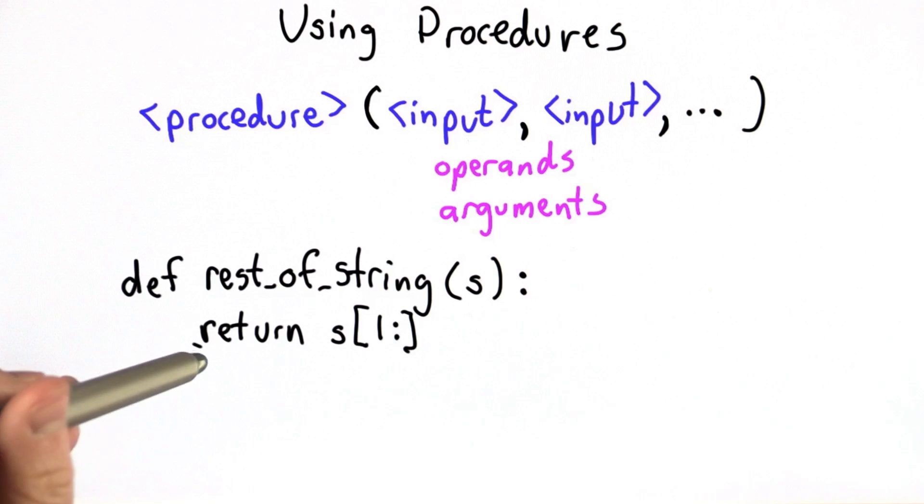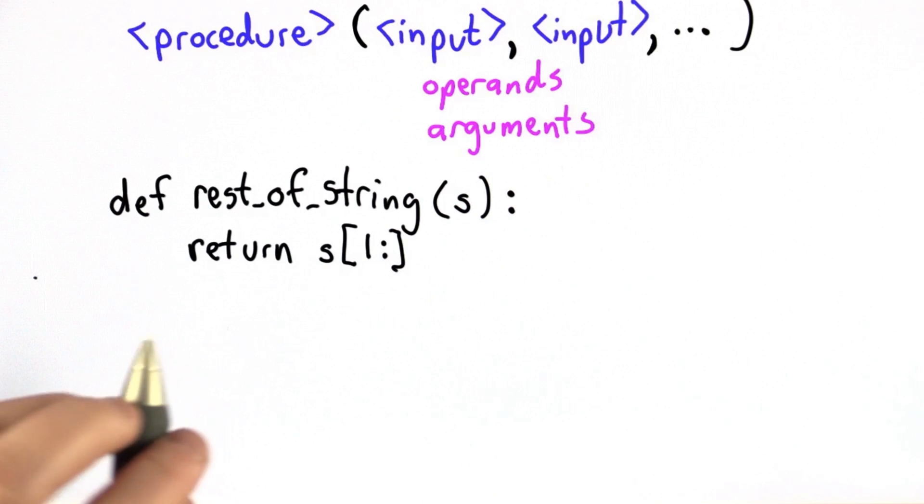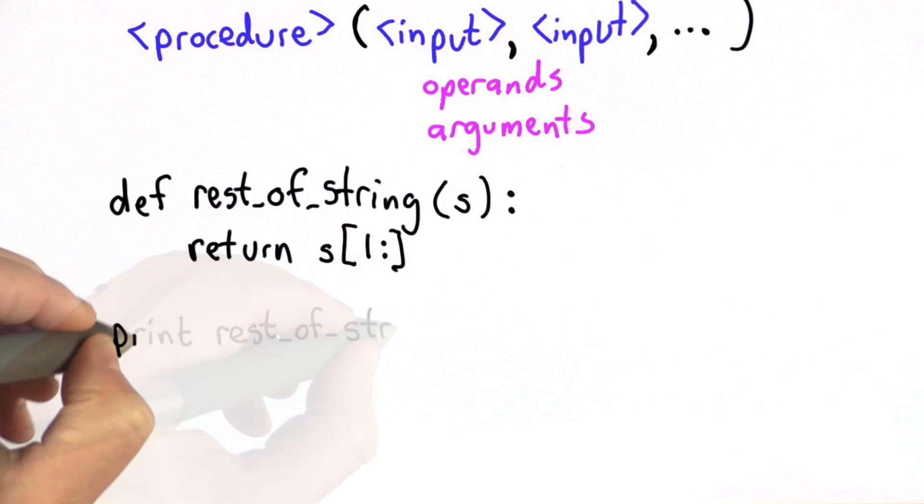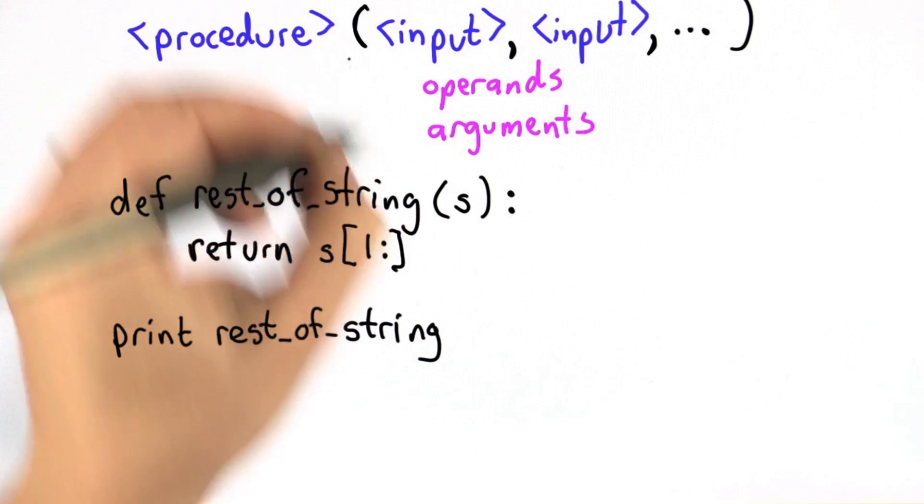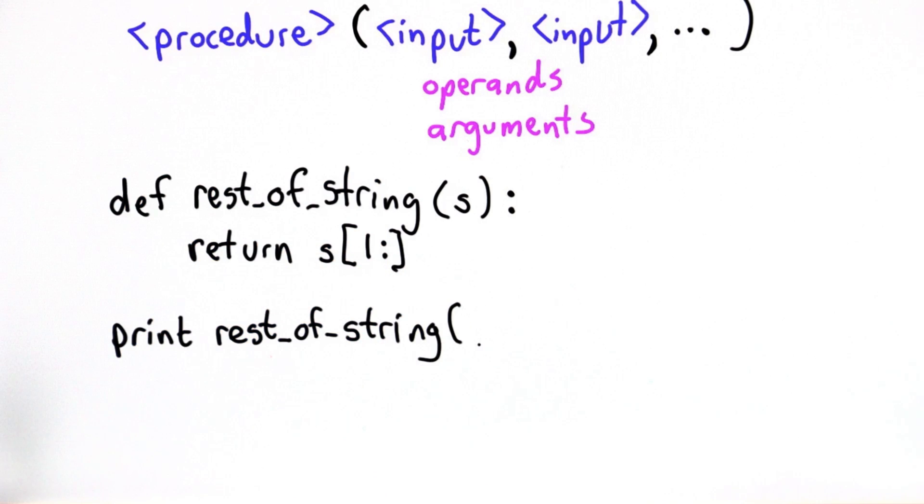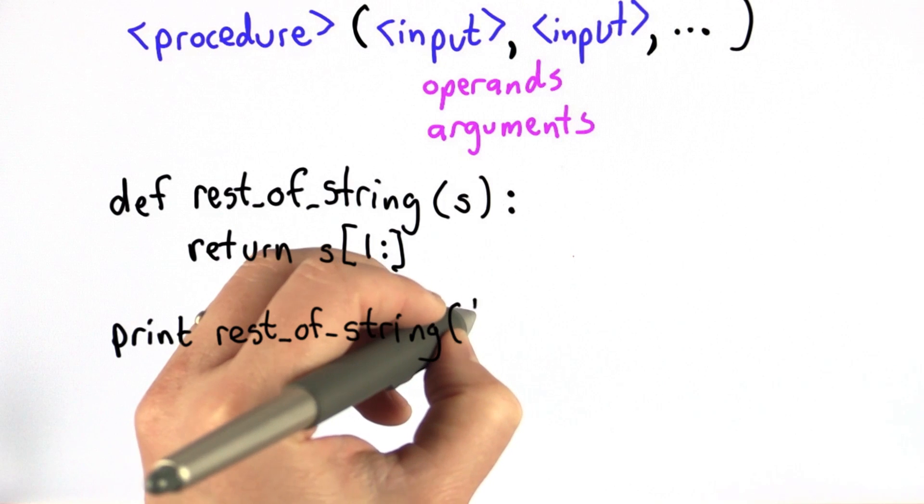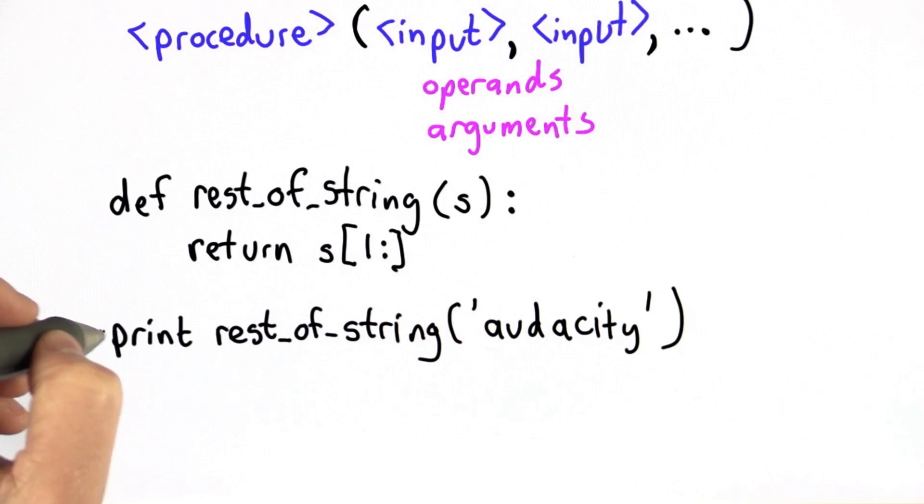So that's the output of rest_of_string, is that new string that starts from the second letter in the input string. Here's an example of how to use this procedure. So we could call it directly. So we could say, print rest_of_string, so that's our procedure. Now we're going to have our paren, and we're going to pass in an input. There's one parameter to rest_of_string, so we need one input to pass in. And it should be a string, so we'll pass in the string audacity.